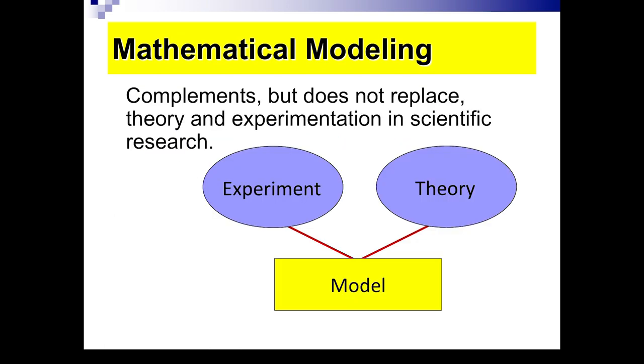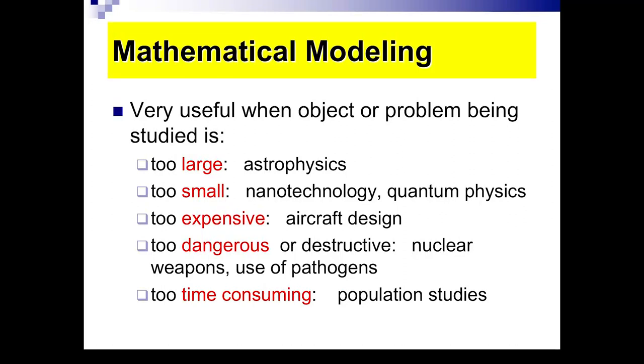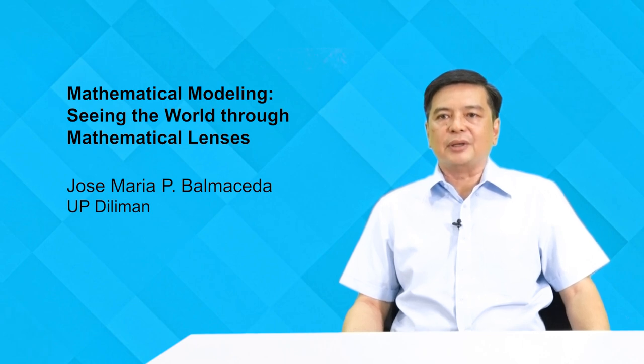Mathematical modeling does not replace experimentation or theory, but is used in complement with those two things. Sometimes it is necessary to do modeling because sometimes the problem is too large to study. If you want to study the universe and the galaxies in astrophysics, then you need models because it's physically impossible to visit all those far stars and planets. Sometimes the problem being studied is too small, we encounter that when we do nanotechnology or quantum physics. Sometimes it's too expensive. For instance, in creating a new aircraft, we can't just build prototypes.